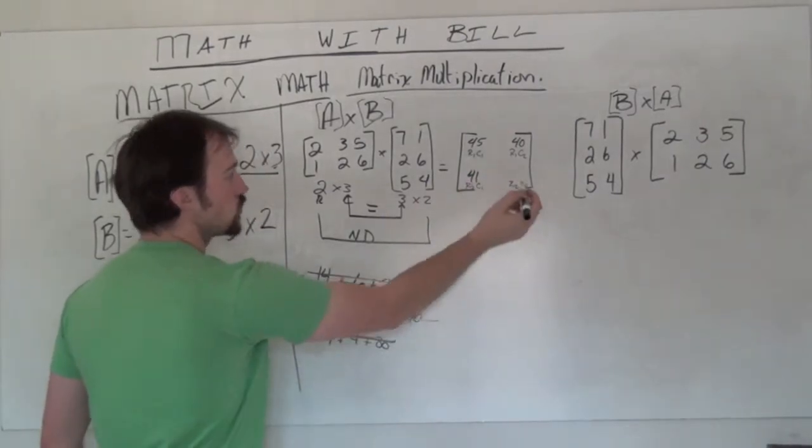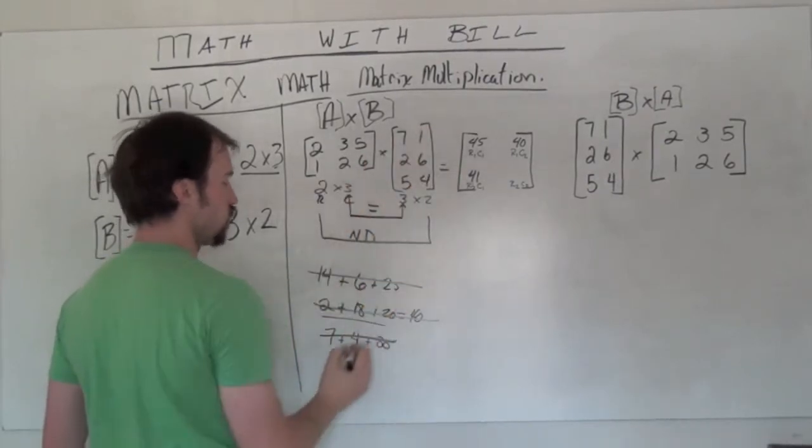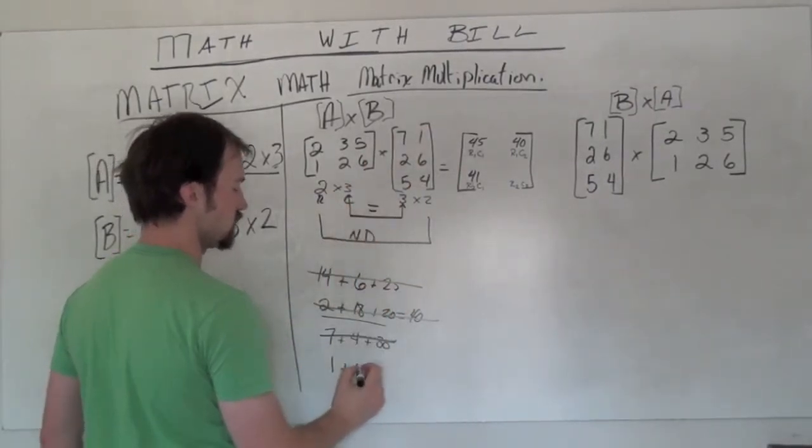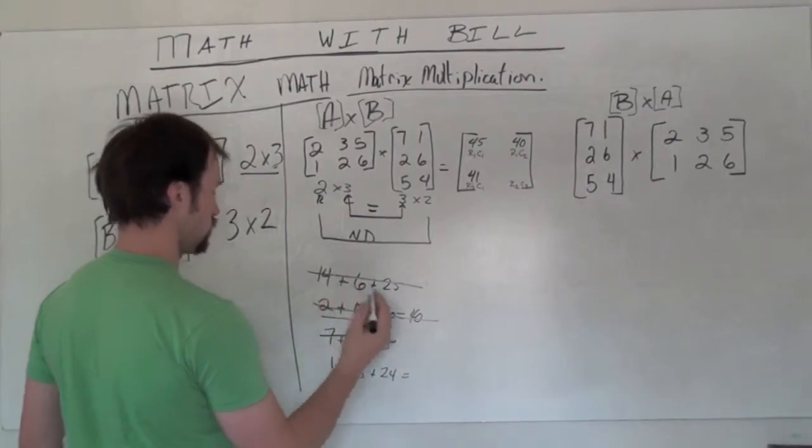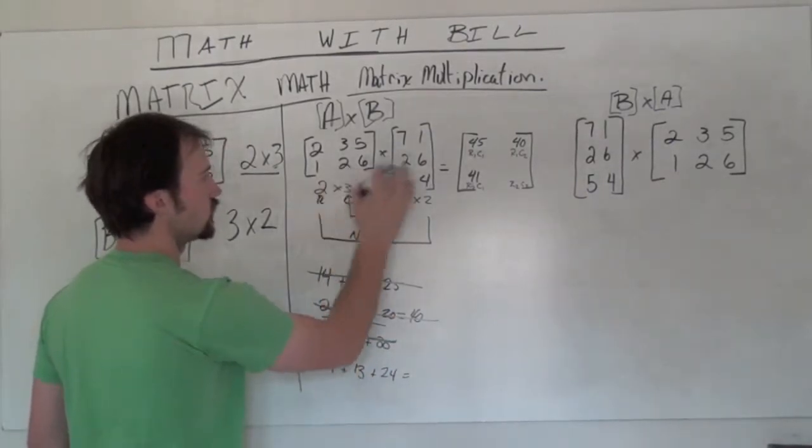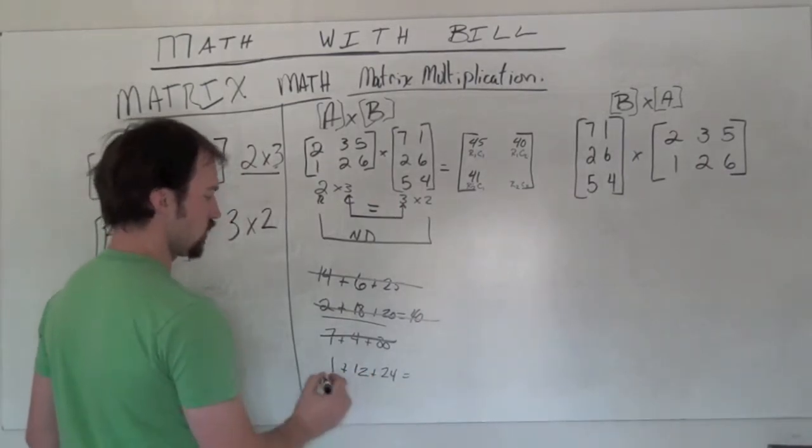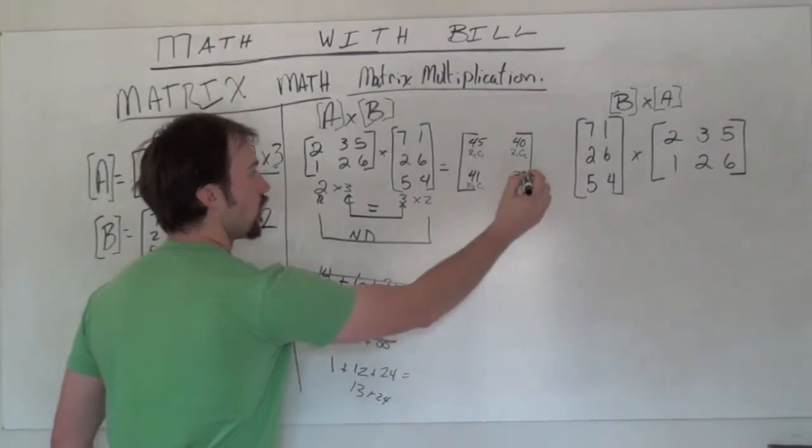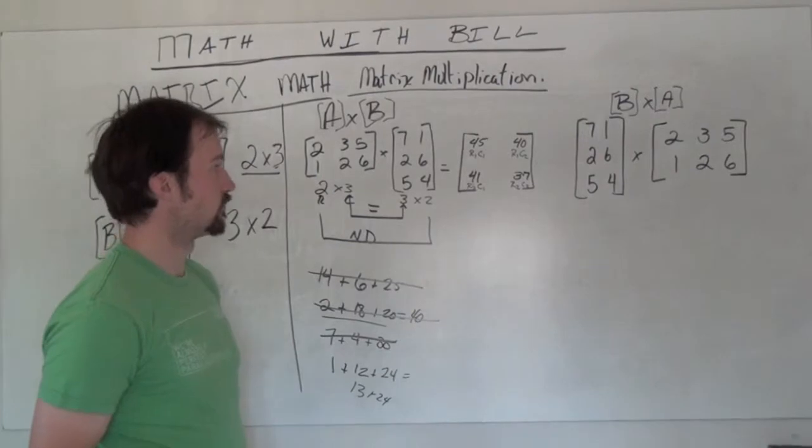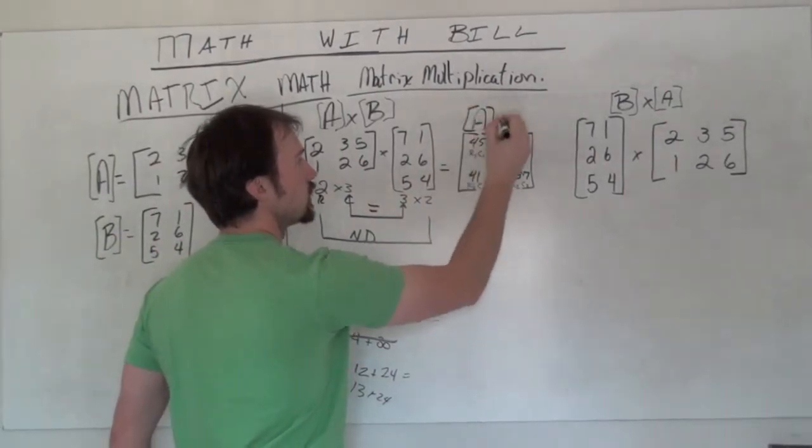And for our final row 2, column 2, it's going to be the 1, 2, and 6, and the 1, 6, and the 4. 1 times 1 gives me 1, plus 2 times 6 is 12, plus 6 times 4 is 24. 13 plus 24 is 37.